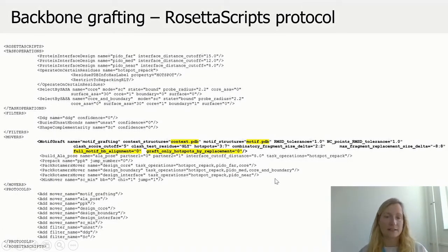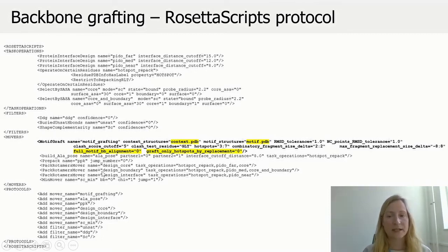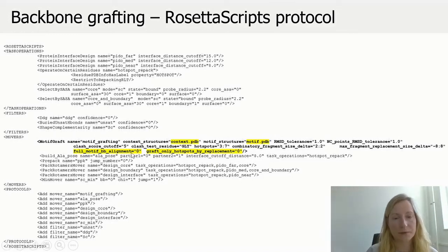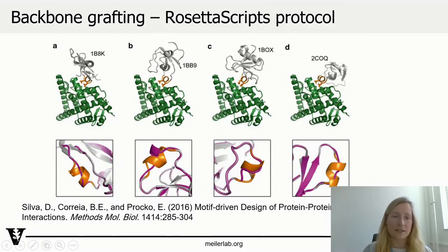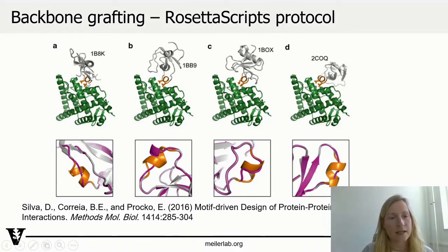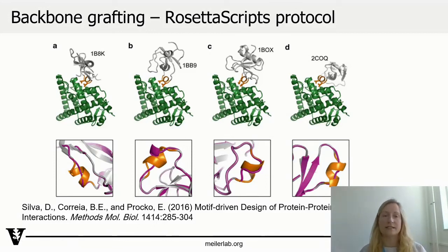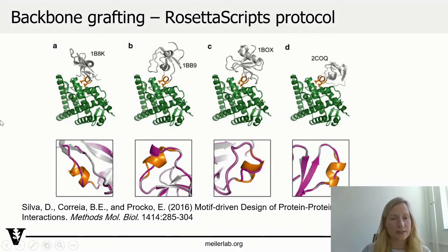Looking at the protocol, it looks very much like the sidechain grafting protocol. Again, you have to define context and motif. However, some options of the motif graft mover are different here. As we already said, we don't want to do a full backbone alignment, so full motif backbone alignment is set to zero. And we don't only want to graft hotspot residues — we want to graft them all — so graft only hotspots by replacement is set to zero. In the tutorial example output, you can see that the helical portion from a peptide that was grafted onto helices before is now really grafted into a loop, with a very different backbone geometry from the scaffold compared to our motif.